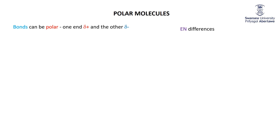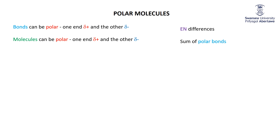The same broad concept applies to molecules. Molecules can be polar — one end is slightly positive, the other end slightly negative. If you approach one end of the molecule, you'll see an area that's electron deficient, slightly positive. The other end has that excess electron density and is slightly negative. The polarity of molecules is due to the sum of those polar bonds within the molecule.